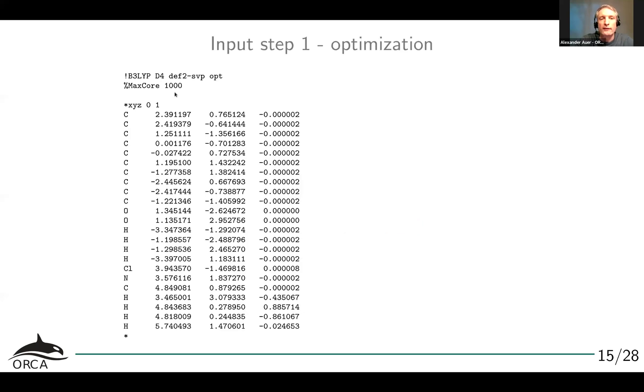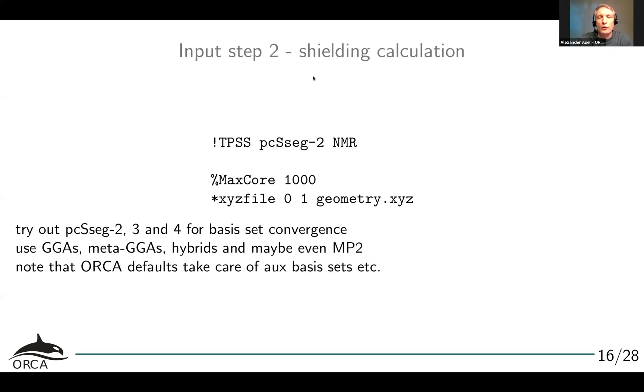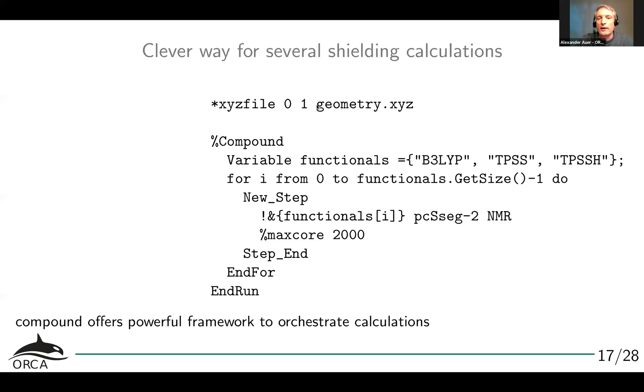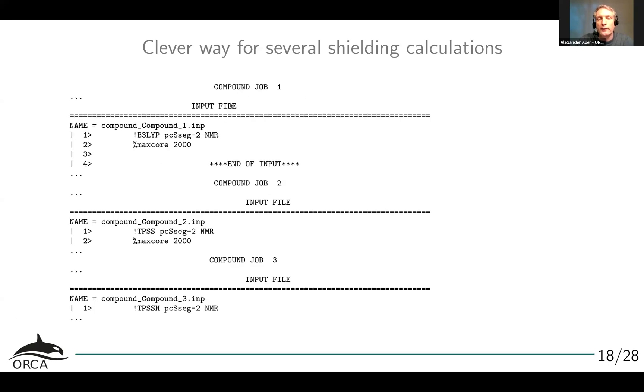So geometry optimization, nothing fancy. This is just a sample input. What we get here is first geometry and I call this geometry.xyz. Then we do the shielding calculation. I do this with TPSS. Benchmarks tell us this is quite okay. Then you just need a keyword, simple keyword NMR, and it will do the calculation for us. We'll try out different basis sets and functionals. Shielding calculation looks very much the same. If we want to be fancy, we can also use a compound script. The compound script is a powerful framework to orchestrate calculations. You still give the geometry, but here you actually define a variable where you give all your functionals. This is your ORCA input line. What this does is it loops through all functionals and does three calculations in one shot. The output file contains compound job one with B3LYP, compound job two with TPSS, and three with TPSS-H, for example. This is really nice and it makes your life a lot easier if you do series of calculations.